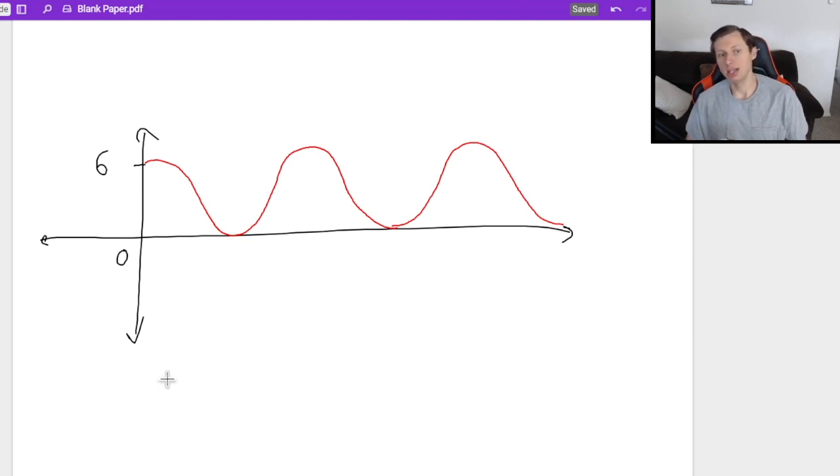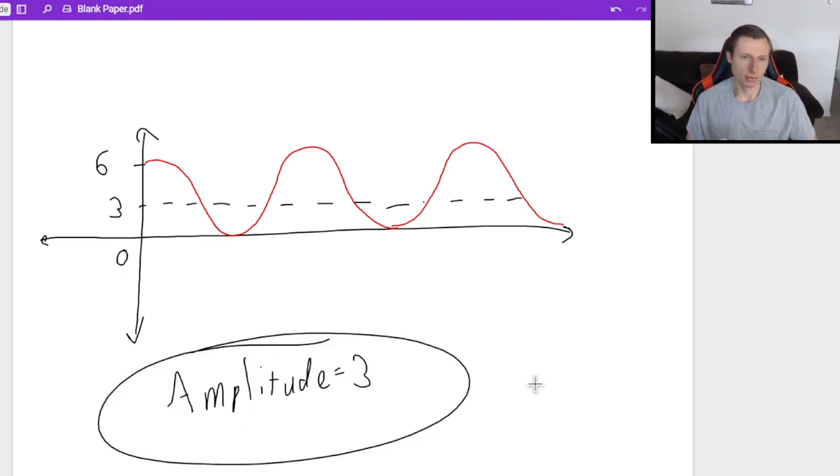The amplitude is not six. And the reason why is because where is your center line? Well, what's halfway between six and zero? The answer is three. So three is your center line. So the amplitude, you're going higher three, you're going lower three, that's why the amplitude is actually three for this graph.